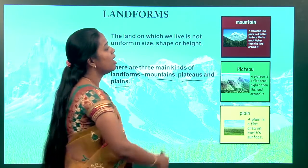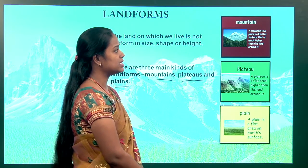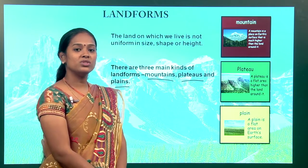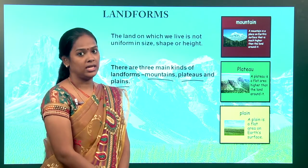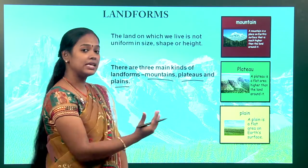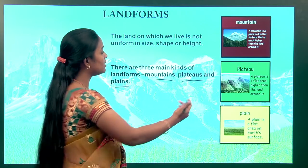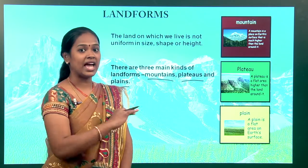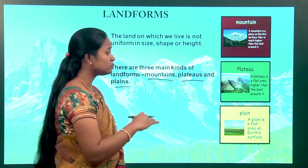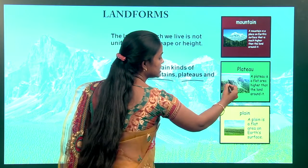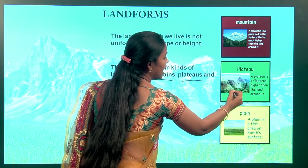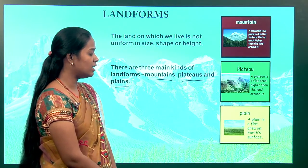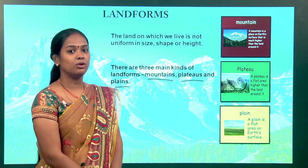What are mountains? A mountain is a place on earth's surface that is much higher than the land around it — very high, with the surrounding area very flat. What are plateaus? A plateau is a flat area higher than the land around it — the surrounding land is low and the plateau is higher. What are plains? A plain is a flat area on the earth's surface, where we grow crops.